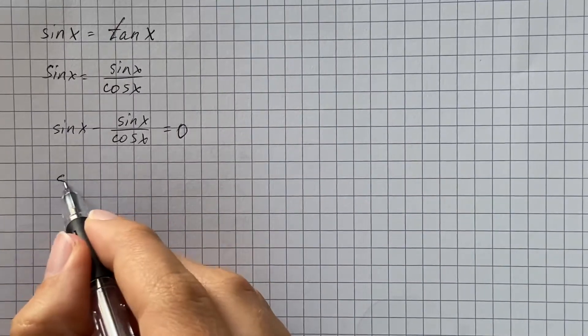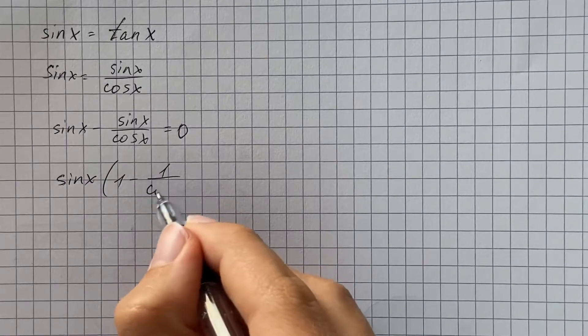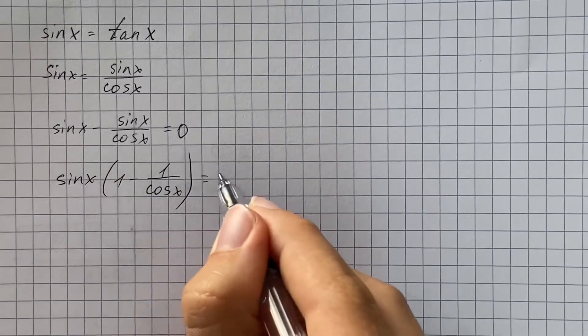Then we're going to factor this, so we'll factor out sine of x and multiply by 1 minus 1 over cosine of x equals 0.